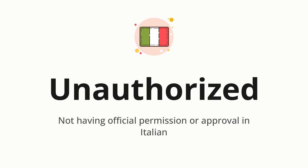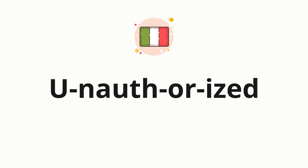Let's say it all together: 'Unottorizid.' One more time — 'Unottorizid.' Now let's split the word into syllables and then pronounce each syllable one by one.